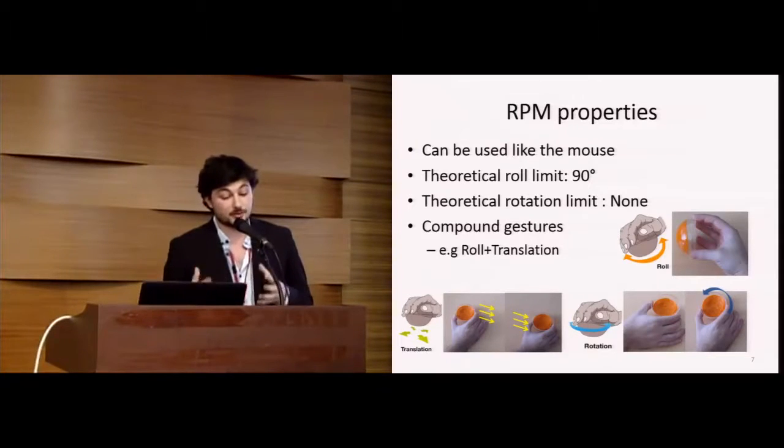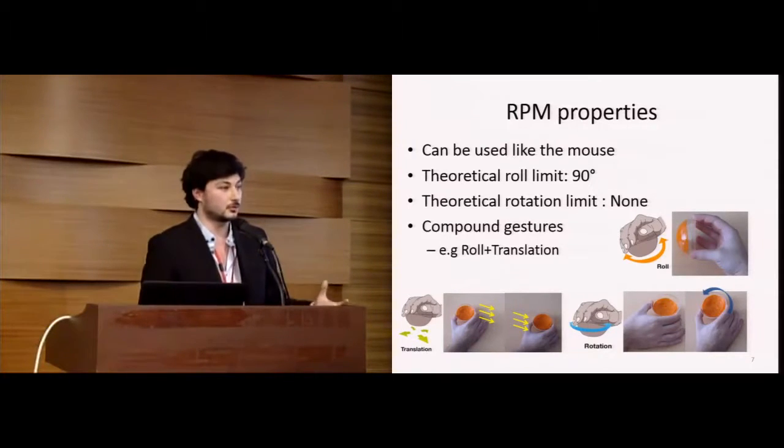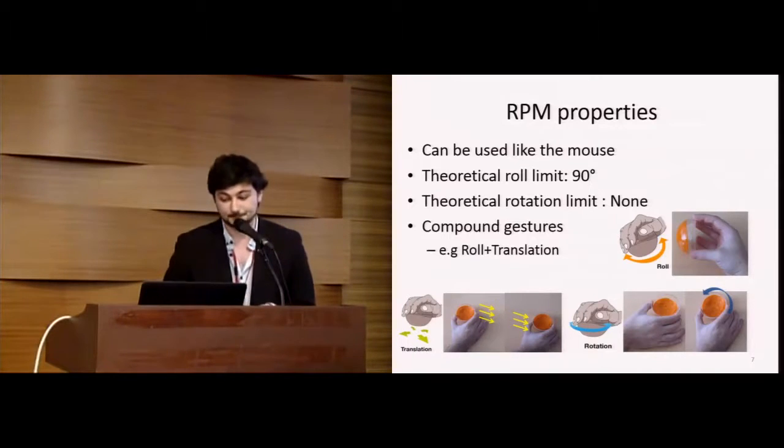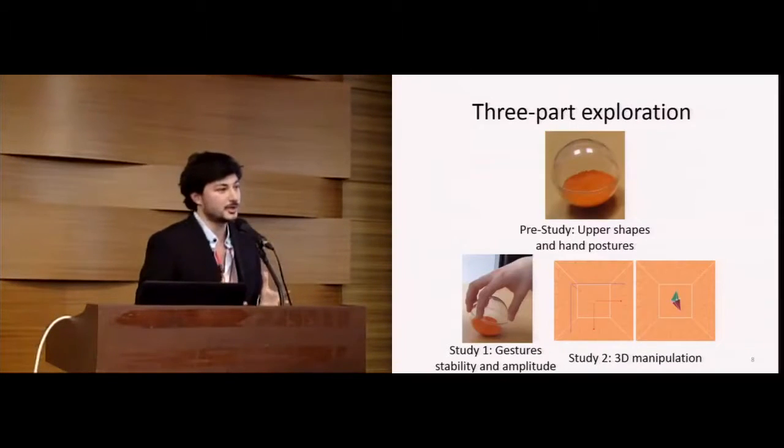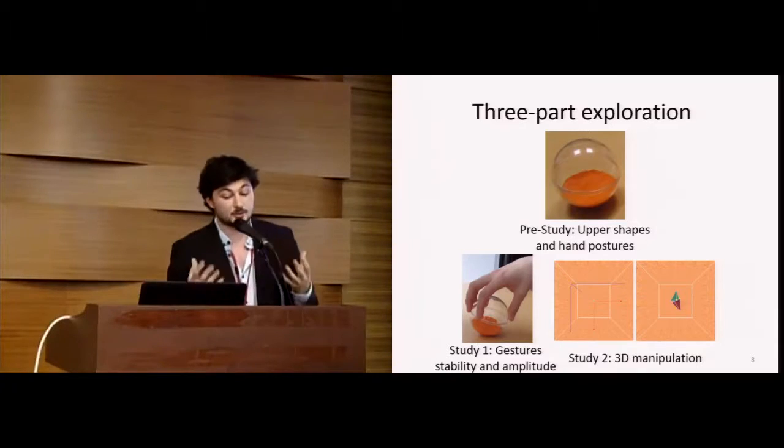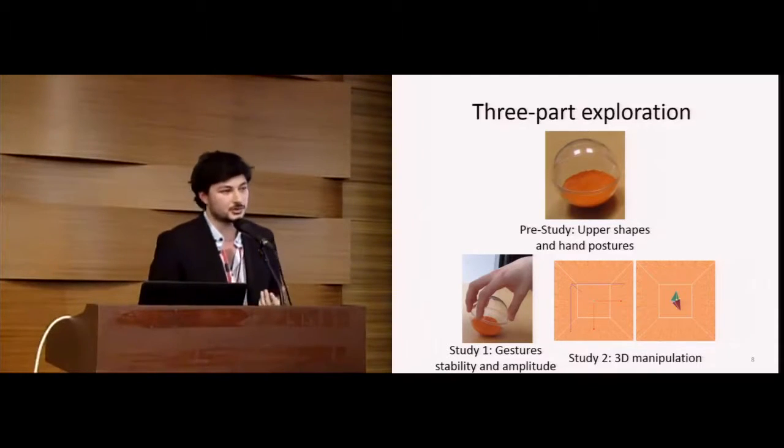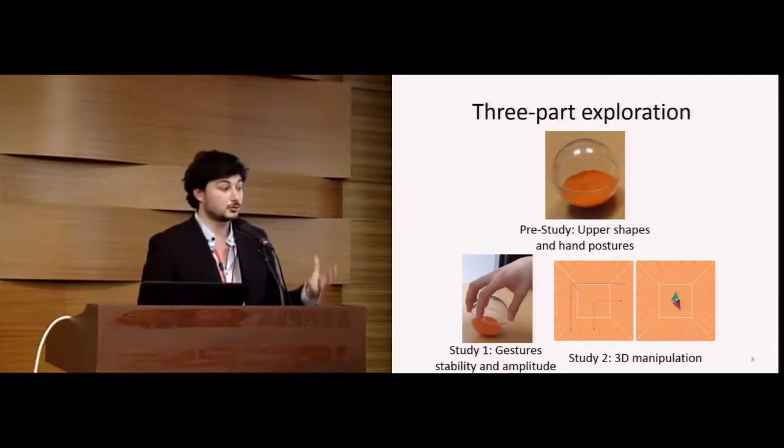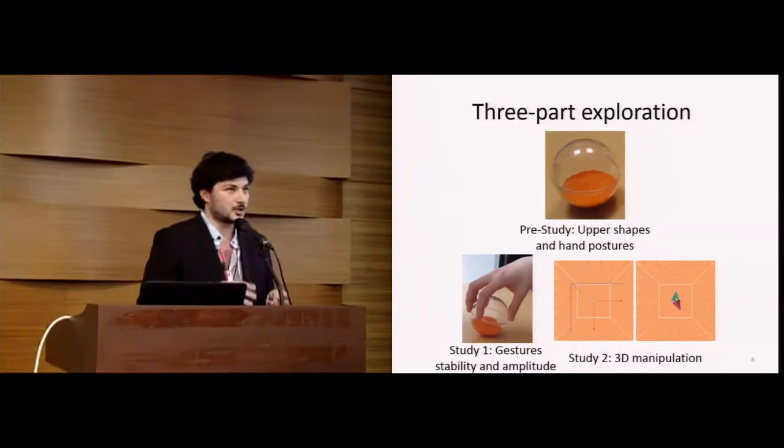Also, users can perform compound gestures, for example, a translation and a roll at the same time. With this device, we had three main questions. The first one was a design question. We wanted to finalize the design of the device by defining its upper shape and by exploring different hand postures. After that, based on these results, we had two research questions. The first one was to determine the limits and capabilities of this new device. And after that, explore its usage in the concrete context of 3D manipulation.